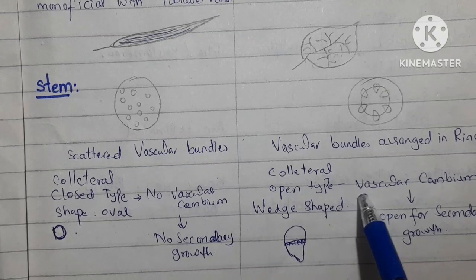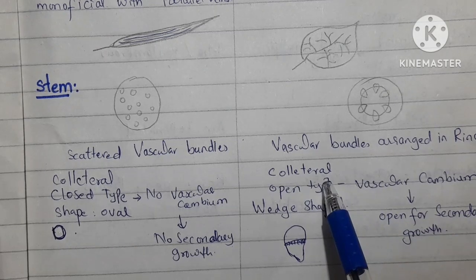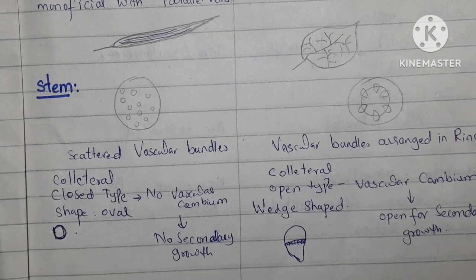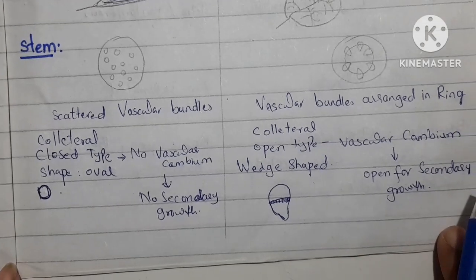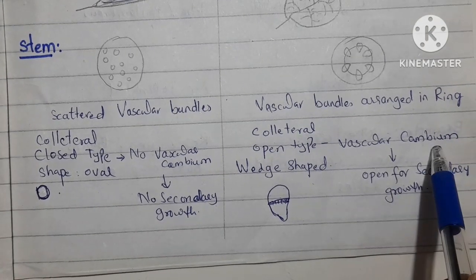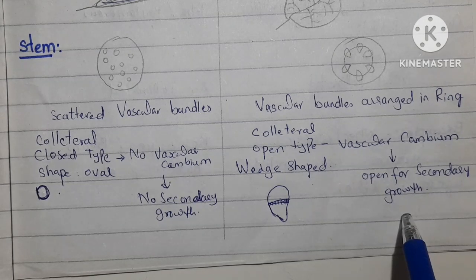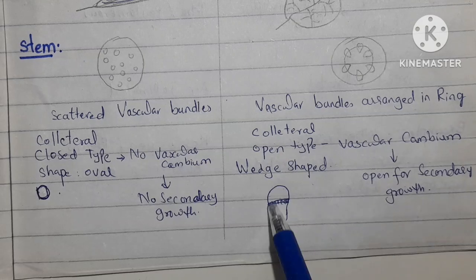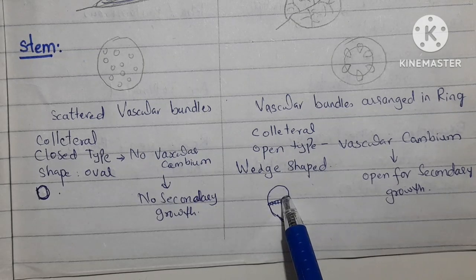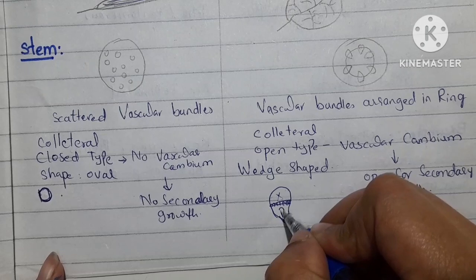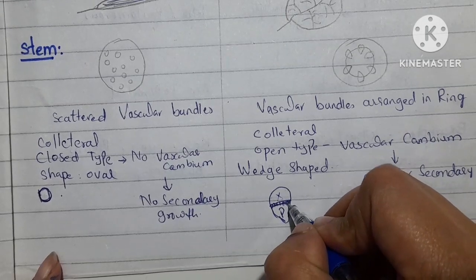In case of dicot, the vascular bundles are also collateral with xylem and phloem together, but they are of the open type. Between the xylem and phloem, there is a vascular cambium. The vascular cambium is responsible for secondary growth, so in case of dicot the secondary growth increases the width of the stem. These vascular bundles are wedge-shaped, with xylem on one side, phloem on the other, and vascular cambium in between enabling secondary growth.